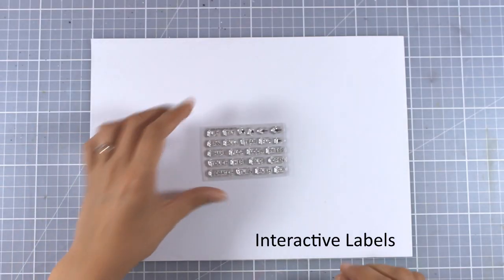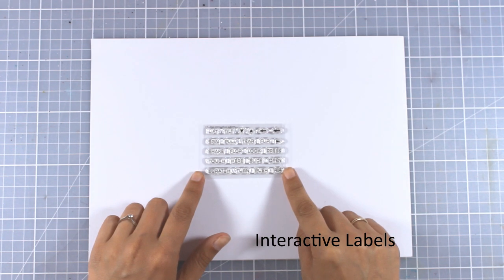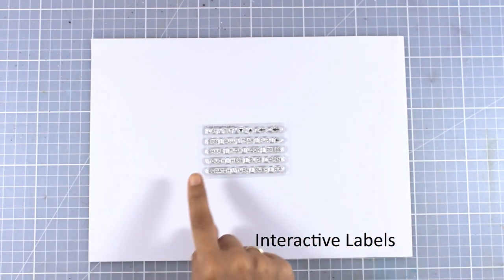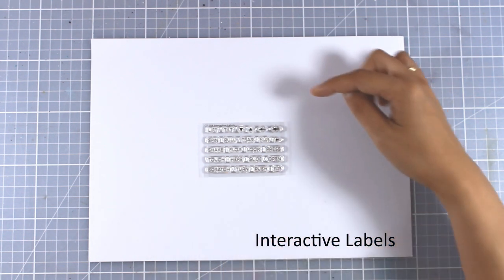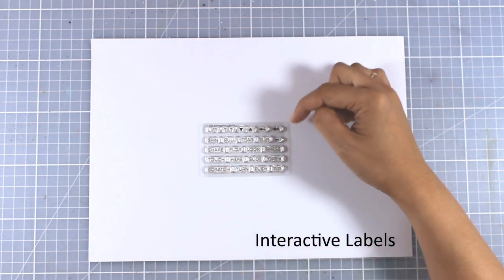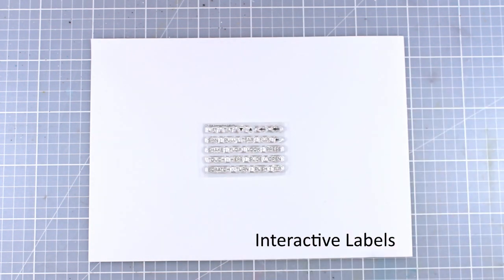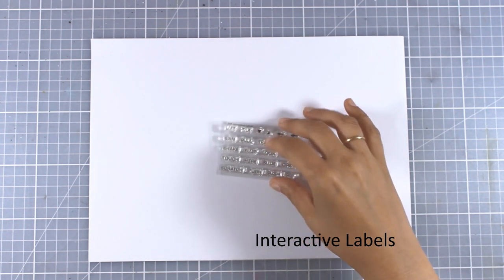Finally, here is a teeny tiny 3x2 stamp set called Interactive Labels. This is perfect for all the interactive cards to inform the recipient of how to interact. There are words such as flip, press, look, open, slide, spin, pull, along with tiny little arrows to complete the label.